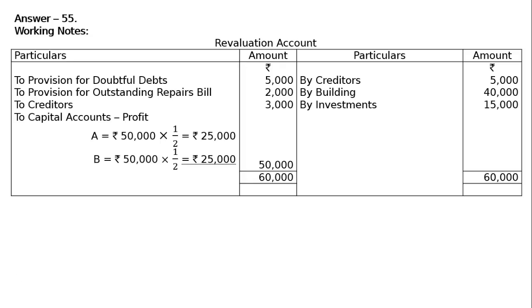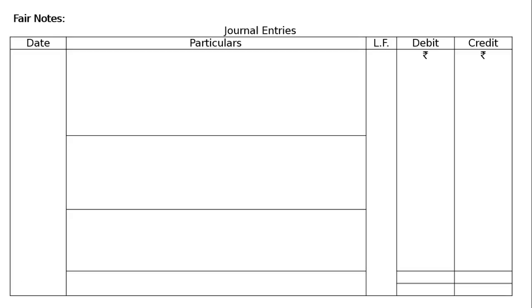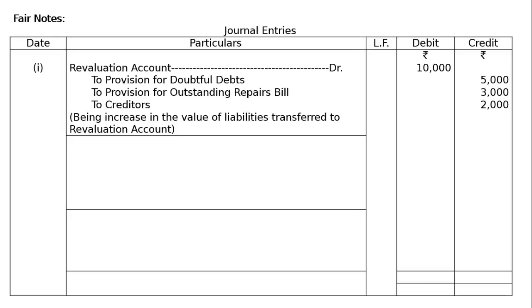Once you prepare this revaluation account, the entries are clear to you. Now proceed to the next step — the proper format of the journal. First entry: revaluation account debited 10,000 to provision for doubtful debts 5,000, to provision for outstanding repairs bill 2,000, to creditors 3,000. Being increase in the value of liabilities transferred to revaluation account.